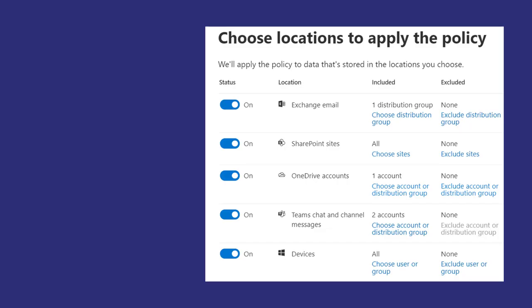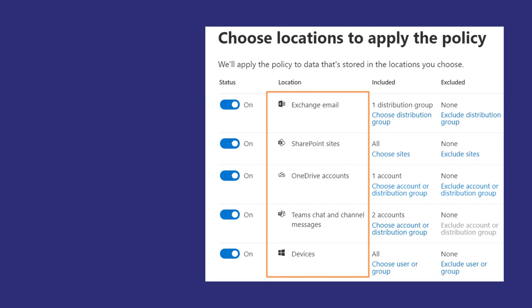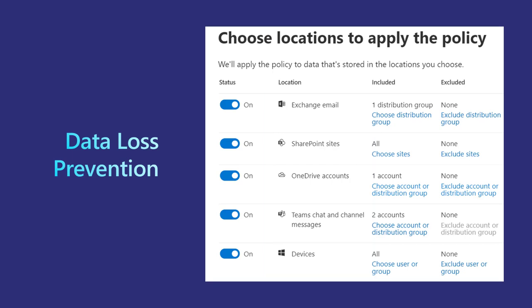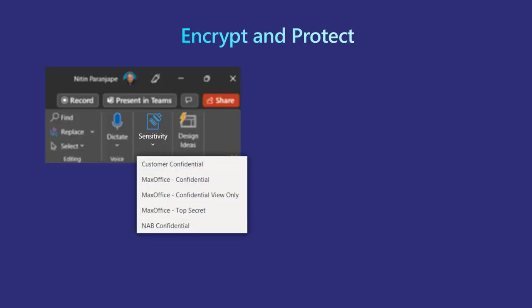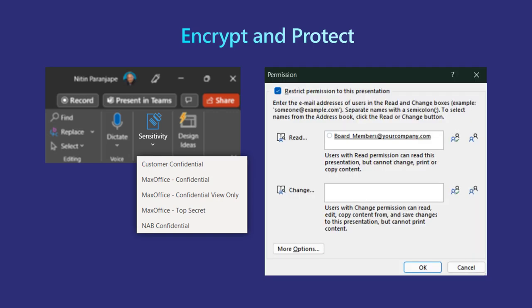Once sensitive data is identifiable, you can allow it to be used for email, chat, and files, but it cannot go outside the organization. That's called data loss prevention, or DLP. The other method is to make the sensitive data encrypted so that nobody can read it except authorized people — for example, only the board of directors, or only the R&D department and the manufacturing team.